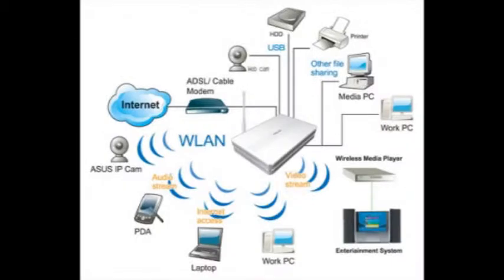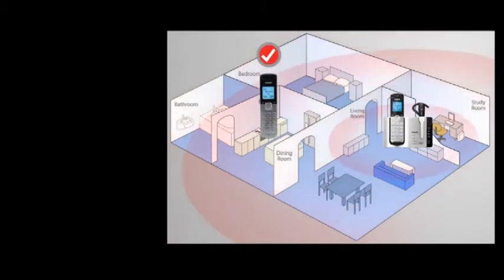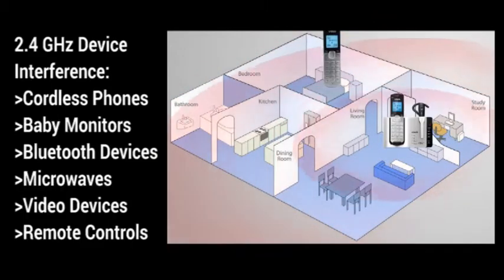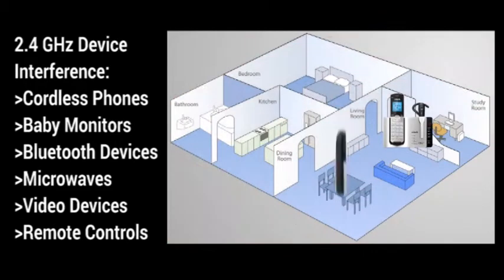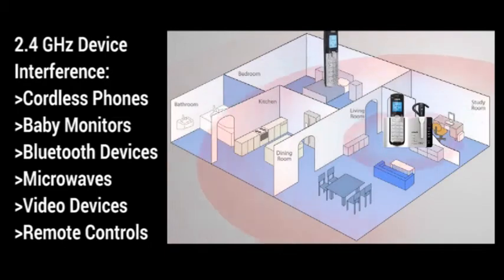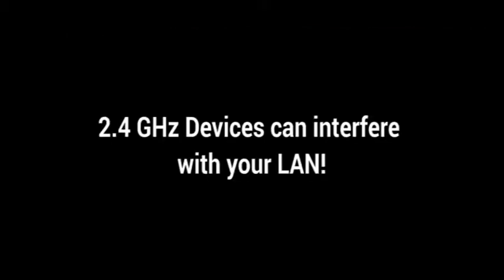If you have a wireless internet connection, make sure your cordless devices do not interfere with your internet connection, as electromagnetic interference at 2.4 GHz can affect various devices such as cordless phones, baby monitors, Bluetooth devices, microwave ovens, some video devices such as wireless cameras, and some remote controls. Having a lot of wireless devices in the area can cause problems. You might face a problem if you are using a 2.4 GHz phone or other device with the same frequency, as this is the frequency of your wireless router and cordless devices can cause significant interference to your LAN.